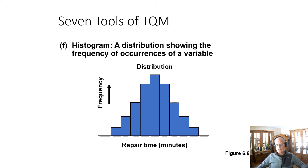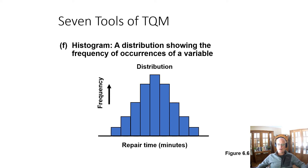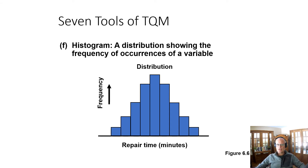The last tool before I get to statistical process control is a simple histogram — a graph that looks at the frequency distribution of a quality variable. Here we could have repair time, which looks relatively normally distributed, and we could figure out how much of the time it's very low but also how much of the time it's very high. Again, a visual way to present data which will help you evaluate where quality issues may be coming from and how commonly they are occurring.